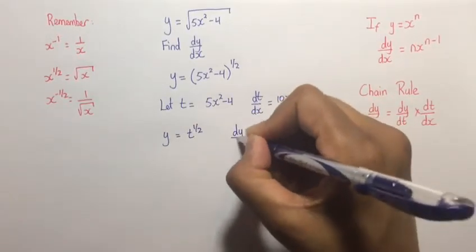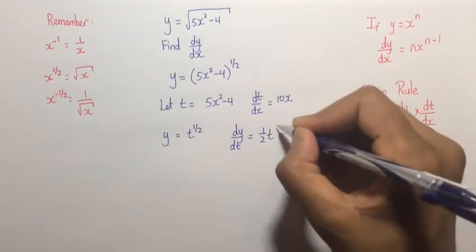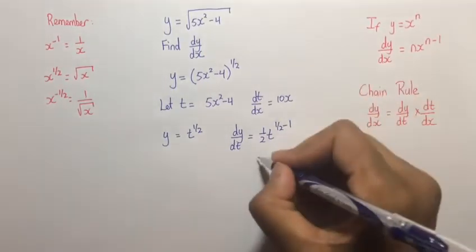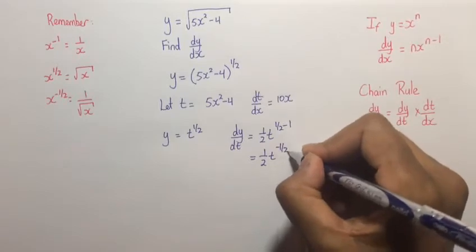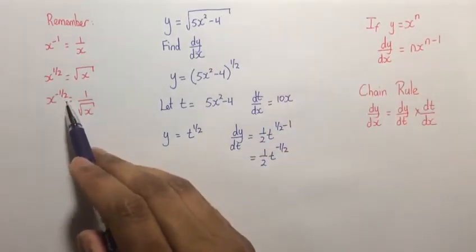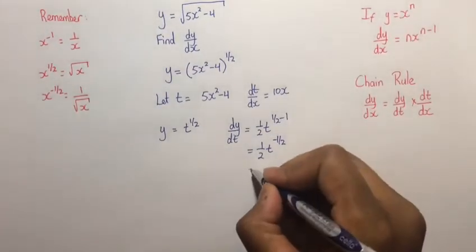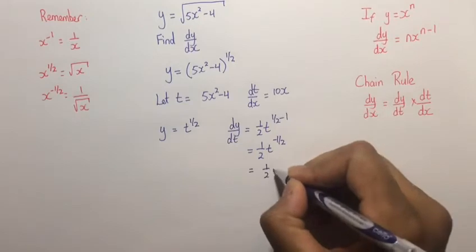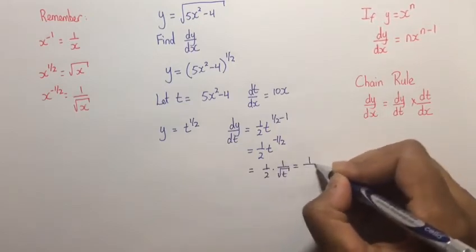If we were to find dy/dt, that would be equal to (1/2)t^(1/2 - 1) which is equal to (1/2)t^(-1/2). Remember that any number to the power of negative 1/2 is equal to 1 over the square root of that number. So dy/dt becomes (1/2) times (1/√t) which is equal to 1/(2√t). Now that we have dt/dx and dy/dt,